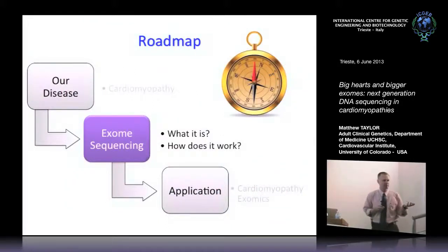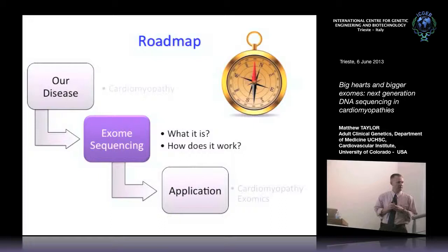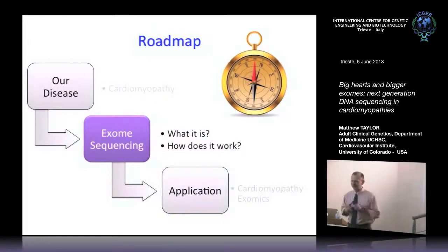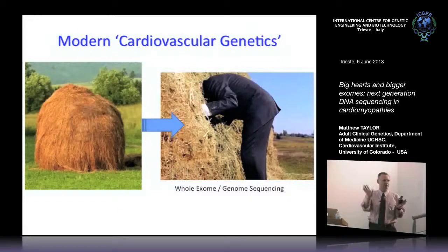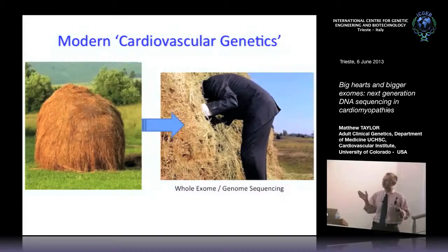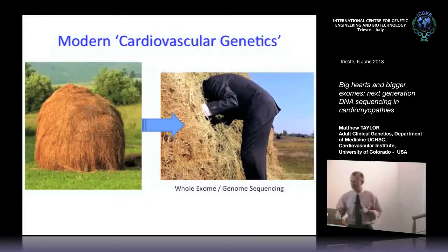That brings us to exome sequencing. Instead of looking at one gene or two genes, you look at all the genes simultaneously — putting your head in the haystack, if you will. There are some problems with it, but most of you have probably done regular PCR and regular sequencing. With traditional PCR, you pick your gene, identify some targets, amplify one target at a time, and then sequence it. If you have to do the whole gene, you repeat these steps separately.